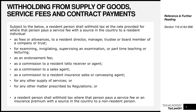Other income streams subject to withholding include endorsement fees, commissions to a lotto receiver or agent, commissions to a sales agent, commissions to a resident insurance agent, and any other supply of services. The concept of withholding tax is an advanced settlement of a person's income tax liability, and the law provides different rates depending on whether the recipient is resident or deemed tax non-resident in Ghana.